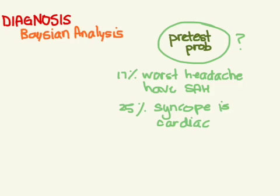So if someone comes in, you might say, okay, they came in with syncope, my pre-test probability for cardiac cause is 25%.